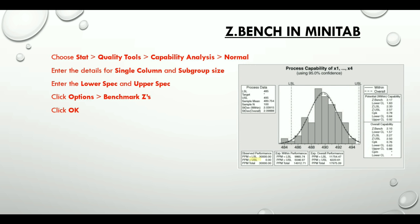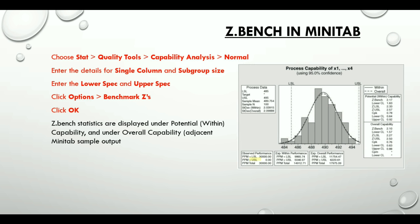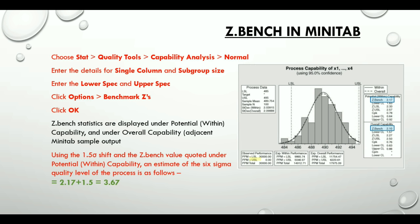ZBench statistics are displayed under Potential Within Capability and under Overall Capability. Using the 1.5 sigma shift and the ZBench value quoted under Potential Within Capability, an estimate of the six sigma quality level of the process will be 2.17 plus 1.5, which is equal to 3.67.